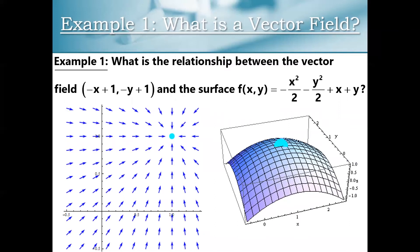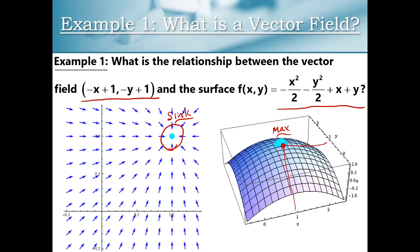We can find some interesting relationships between things we've studied before and vector fields. Here we have an example where our vector field and the equation for a surface have a relationship to each other. Notice how we have a sink at the point 1 comma 1 in our vector field, and if you look at 1 comma 1 comma f of 1 1 for this surface, we have a max right there. That's not an accident — this vector field turns out to be a gradient field, a vector field made out of gradient vectors.